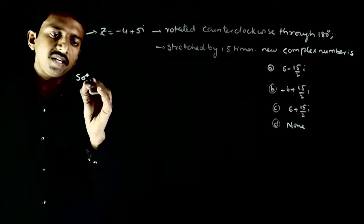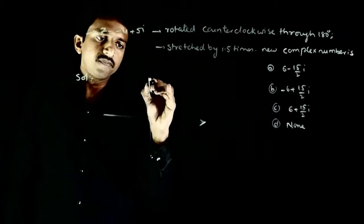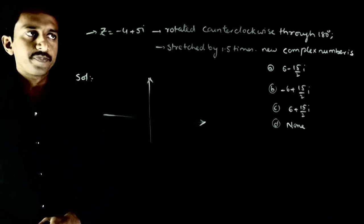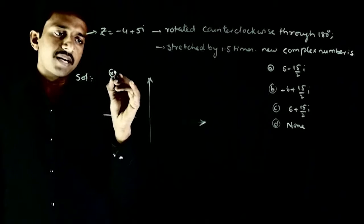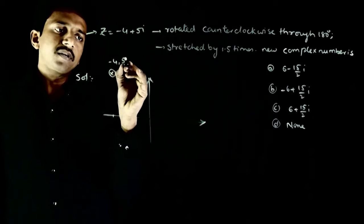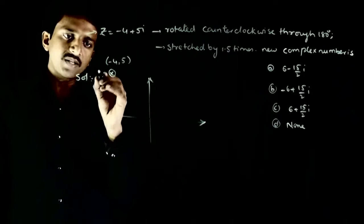You have the Argand plane and the complex number is -4 + 5i, -4 + 5i. You have the complex number represented in Argand plane, let this point be P.